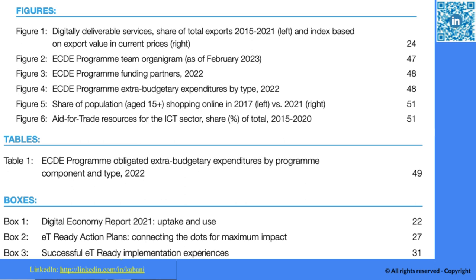There are various figures, tables, and maps throughout the report. Key figures include digital delivery services in terms of exports — showing export values at current prices on page 24. You can also find the program team and organizational structure, the program funding partners including the UK, US, and others, an extra-budgetary expenditure table, a chart on the share of population aged 15+ shopping online comparing 2017 versus 2021, and aid-for-trade resources for the ICT sector.